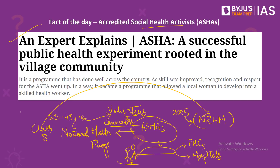ASHA workers go door to door in designated areas creating awareness about basic nutrition, hygiene practices, and government health services. They are tasked with ensuring children get immunisation and informing their primary health centres of any births or deaths in their areas. During the COVID-19 pandemic, ASHAs were tasked with motivating people to get COVID-19 shots and collecting data on vaccination status. ASHA workers were a key part of the government's pandemic response.